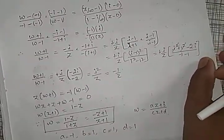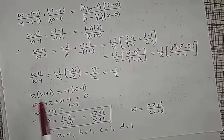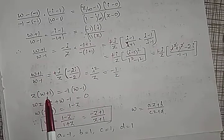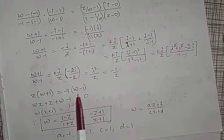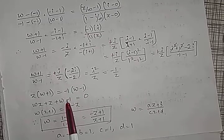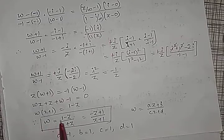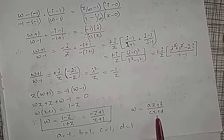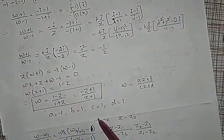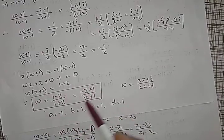Now solving for omega: cross-multiplying gives z(omega + 1) = minus 1(omega minus 1). Expanding and collecting omega terms: z·omega + z = minus omega + 1, so omega(z + 1) = 1 minus z, therefore omega = (1 minus z)/(1 plus z). Rearranging in standard form az + b / cz + d: a = minus 1, b = 1, c = 1, d = 1. This is the required conformal transformation.